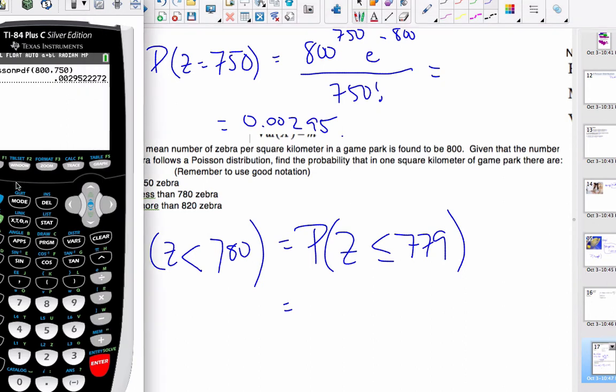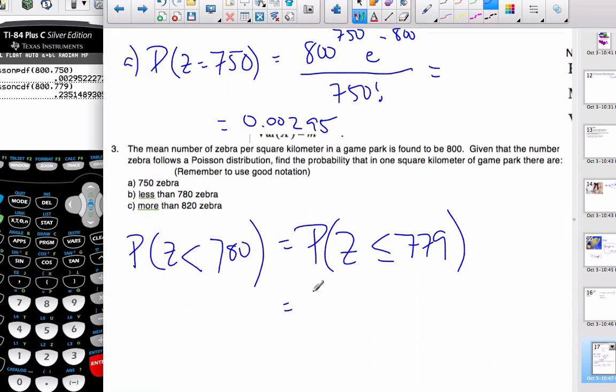Using this, going to my calculator, distributions, Poisson cumulative, because I'm going to add up a whole bunch of them. The parameter is 800, and the value is 779. There's a 0.235 chance of having 779 zebras or less in a square kilometer area. That's part b.